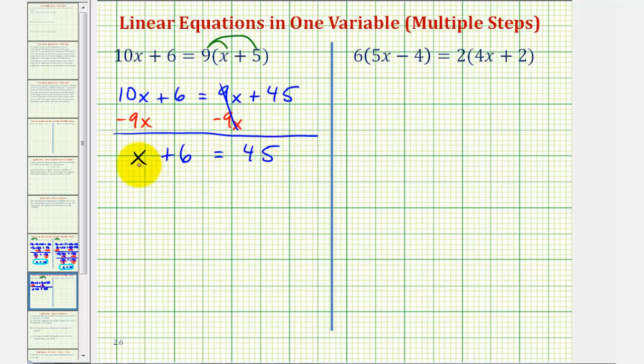Notice how this simplifies to a one-step equation, so to solve for x we'll now undo this addition by subtracting 6 on both sides of the equation. This simplifies to zero, leaving us with x on the left, and on the right we have 45 minus 6, which is equal to 39.